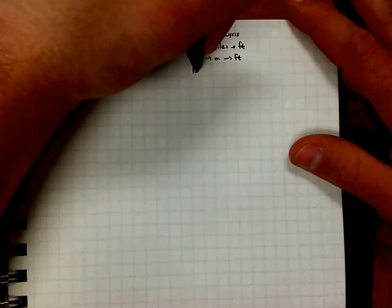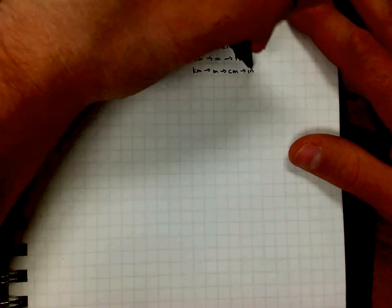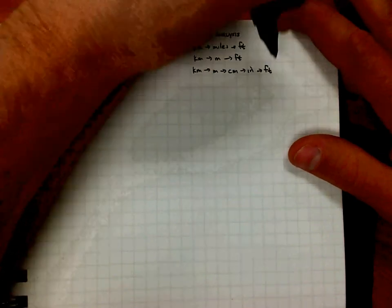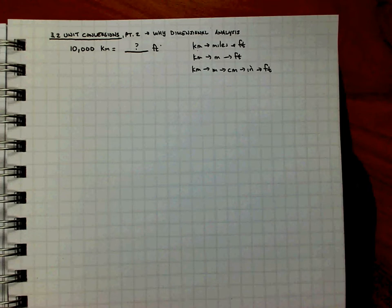In fact, if we wanted to, we could really go kilometers down to meters, down to centimeters, down to inches, and then over to feet. That would work. What we're seeing here is the idea that, number one, there's not just one correct way to do it, which is kind of a theme. We're doing our math in this class, there's always more than one way to solve a problem.